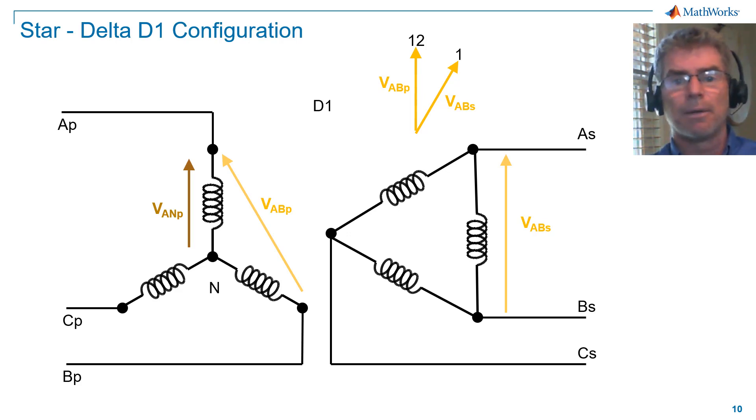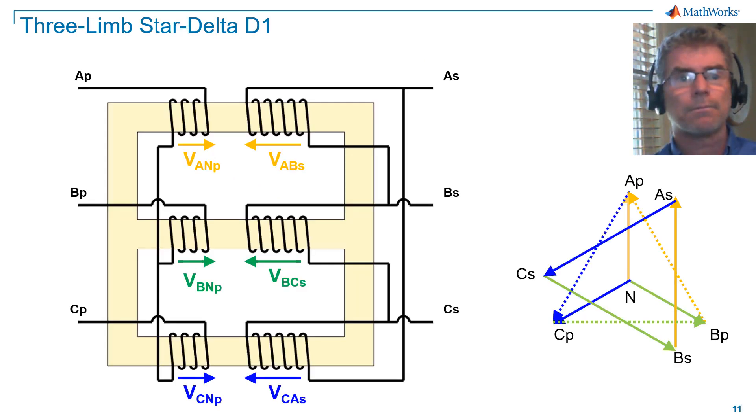What you can see from this diagram is that because the line-to-line coils in the secondary are wound on the same limb as the line-to-neutral coils in the primary, then the corresponding voltages are in phase. Phase voltage VAN on the primary is in phase with line voltage VAB on the secondary, and so on. I've also shown a vector representation of this configuration on the right.